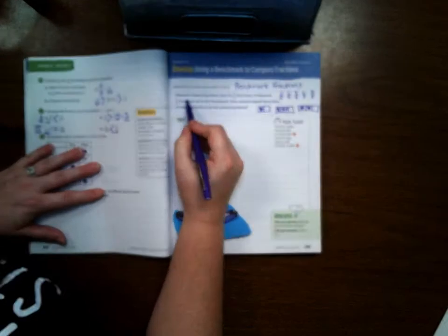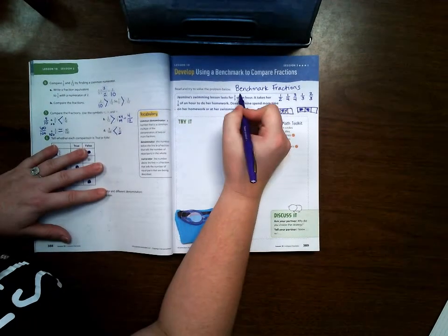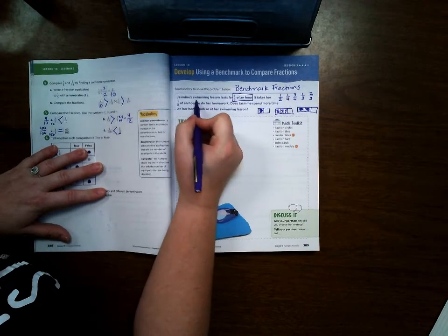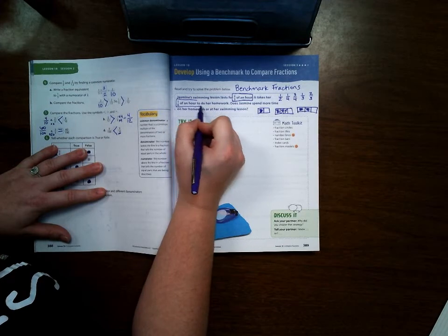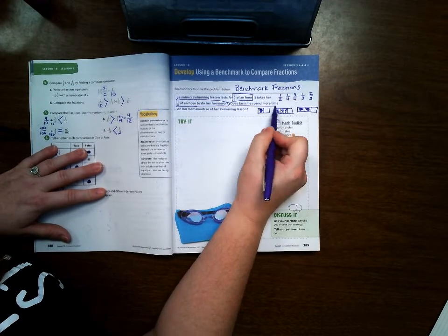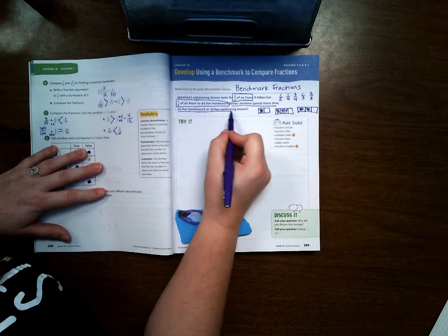All right. Jasmine's swimming lesson lasts for two-thirds of an hour. It takes her one-sixth of an hour to do her homework. Does Jasmine spend more time on homework or at her swimming lesson?